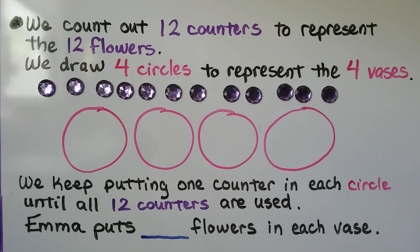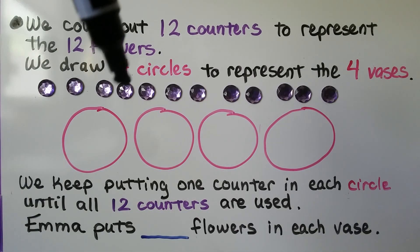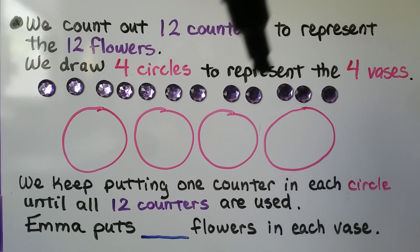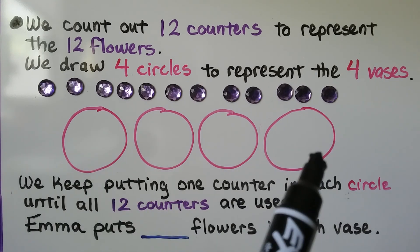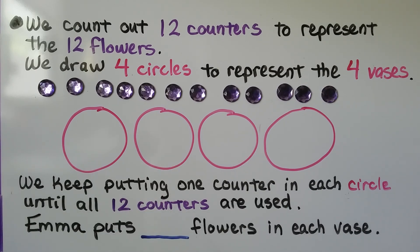We count out 12 counters to represent the 12 flowers. We count 1 through 12. We draw four circles to represent the four vases, and we keep putting one counter into each circle until all 12 counters are used.